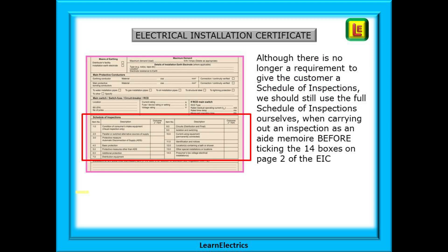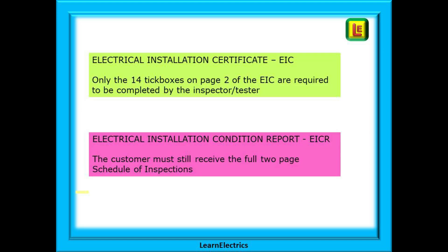Although there is no longer a requirement to give the customer a schedule of inspections, we should still use the full schedule of inspections ourselves when carrying out an inspection as an aide-memoire before ticking the 14 boxes on page 2 of the EIC. So only the 14 tick boxes on page 2 of the EIC are required to be completed by the inspector or tester. But with an Electrical Installation Condition Report, or EICR, the customer must still receive the full two-page schedule of inspections.